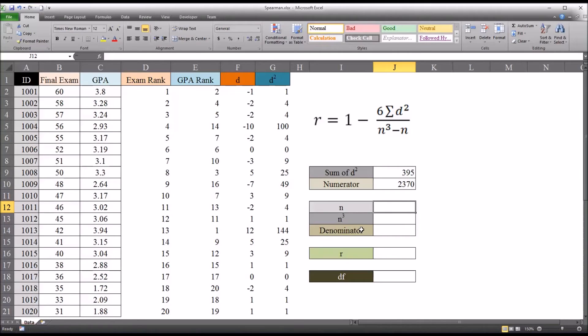Now we have N as we start to build the denominator. And N is the count, the number of pairs. In this case, we know it's 20. And to calculate N cubed, it'll be J12, and caret, then 3. So N raised to the third power, that's 8,000. So N cubed minus N, very easy to calculate here, it'll be J13 minus J12. 7,980.